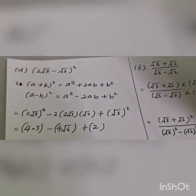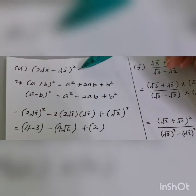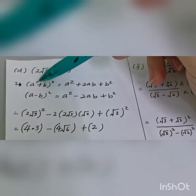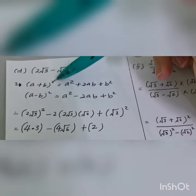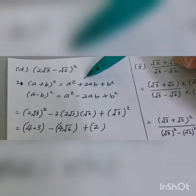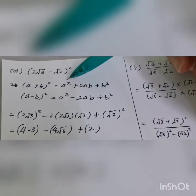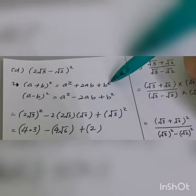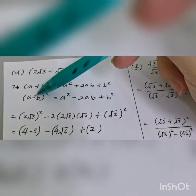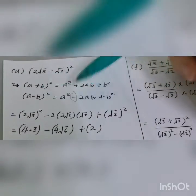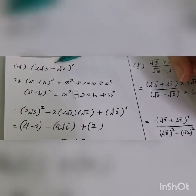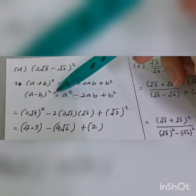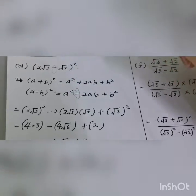Before the next example, make sure you know this concept: (a + b) squared expands as a² + 2ab + b². This is a shortcut to expand brackets. If the middle sign is minus, the formula becomes a² minus 2ab plus b². This question has a minus, so we use this method.